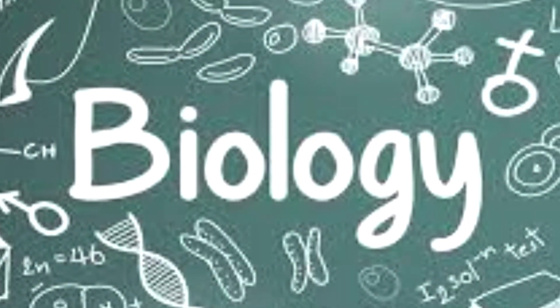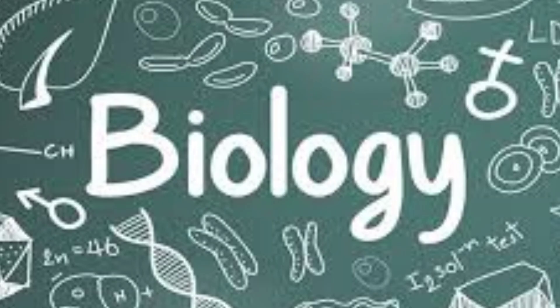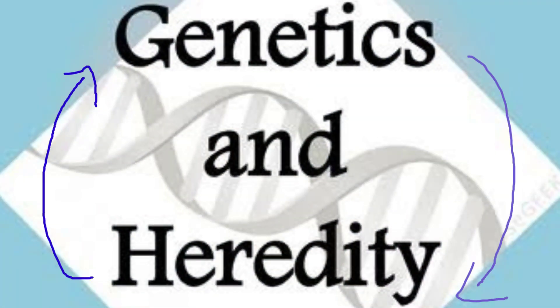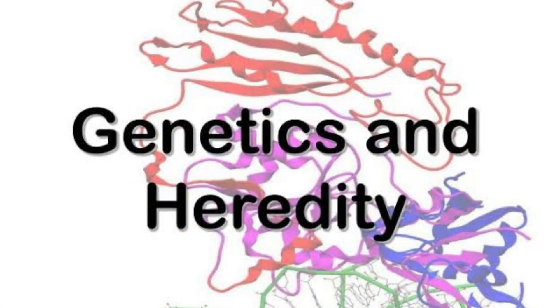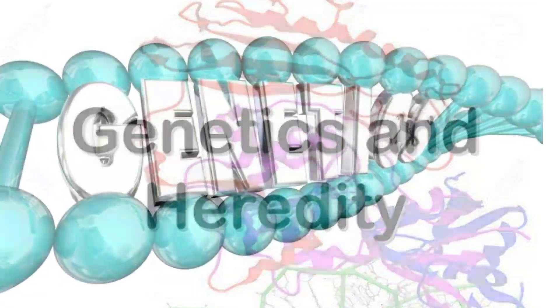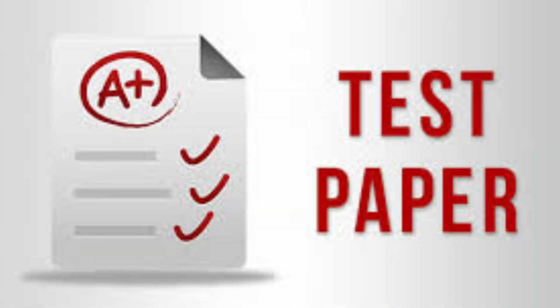Hi guys, this is Bursha and you're watching Mastermind. In this session we are going to discuss the important questions from the third chapter of biology, that is heredity and genetics. We have already uploaded a video on the important questions from the first and second chapter of biology, so if you haven't watched that video you can watch it from the link provided in the description box. All these questions are from the model test papers of many different books.